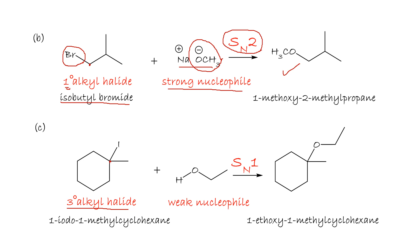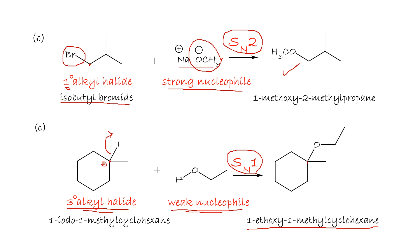Next: 1-iodo-1-methylcyclohexane with a weak nucleophile — once again tertiary alkyl halide and weak nucleophile gives SN1. The product will be 1-ethoxy-1-methylcyclohexane. Removing the leaving group forms a highly stable tertiary carbocation, so there is no rearrangement.